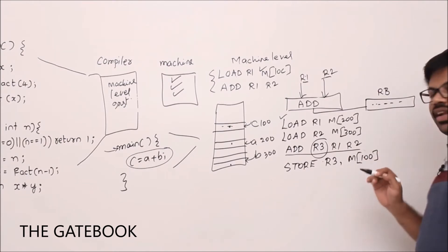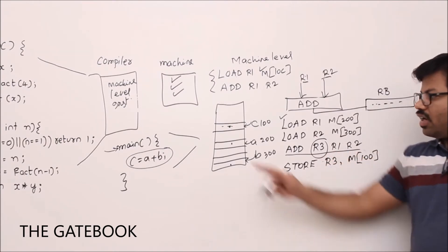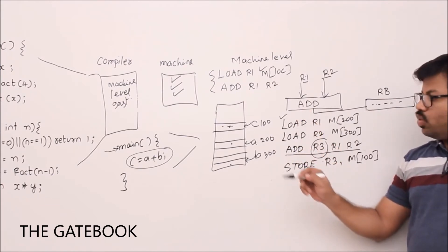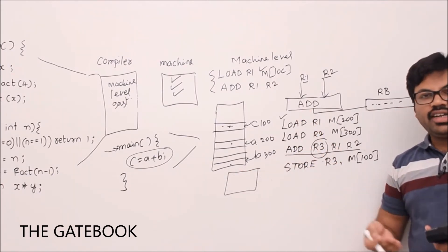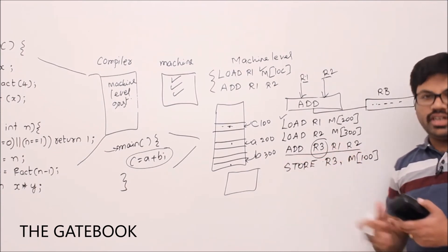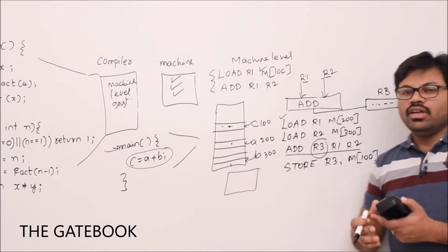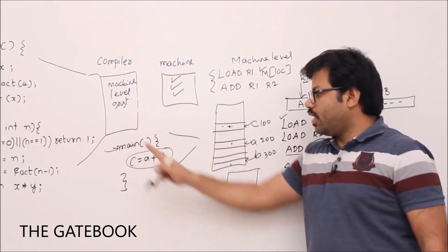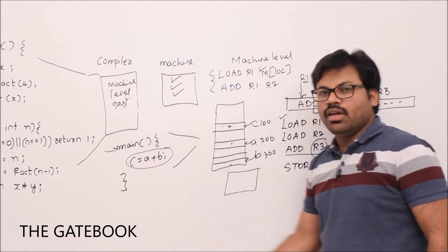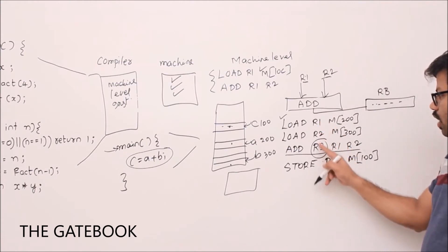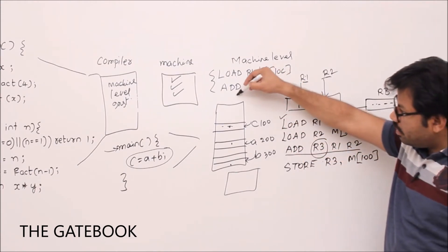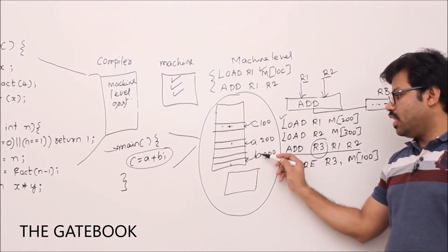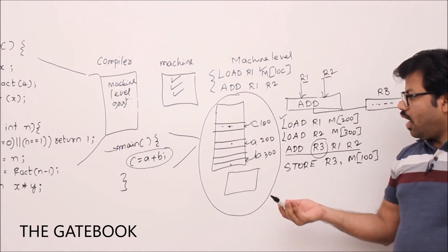Then, to store the result in c, there is an instruction called store — which stores a register value into a memory location. The source is register r3 and the destination is memory location 100. Your compiler knows where c, a, and b are — it stores values into those memory locations and remembers them through a symbol table. So high-level programs are converted to this kind of low-level machine instructions.